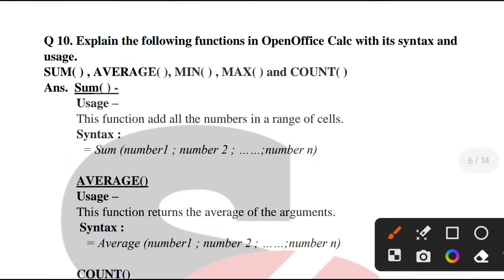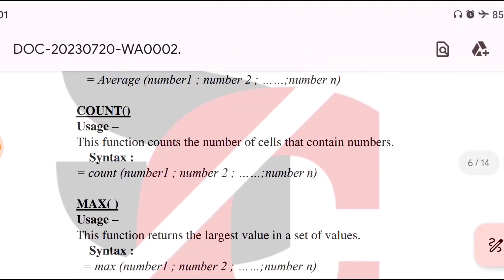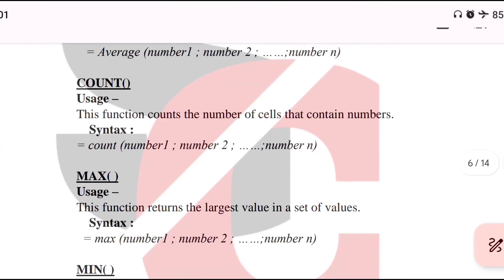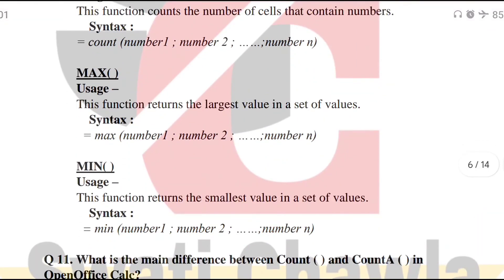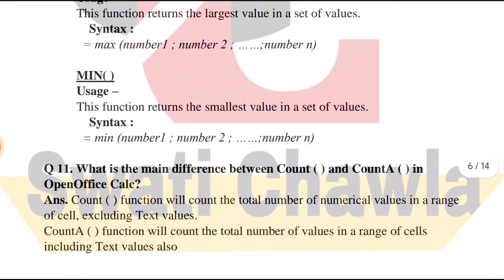Question 10: Some functions you have to explain. SUM function - if I want to add values, write sum. This is its syntax: equals to sum (number1; number2; ...). AVERAGE function - if I want to find average. COUNT function - if I want to count how many numbers are there. MAX function - if I want to see which cell has maximum value among all cells with values. MIN function - if I want smallest value, we use MIN function.